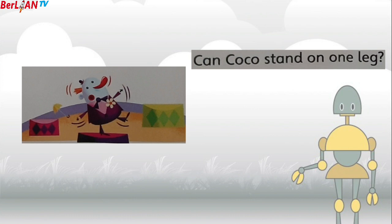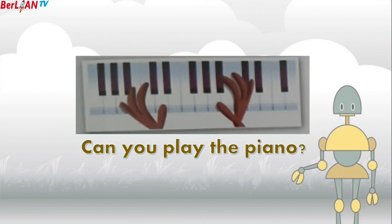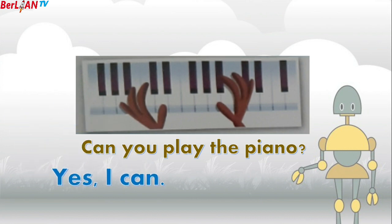And this is Coco the clown. Can Coco stand on one leg? Bisakah Coco berdiri di atas satu kaki? No, he can't. Tidak, dia tidak bisa. Can you play the piano? Bisakah kamu bermain piano? Yes, I can — jawab begitu jika kamu bisa. No, I can't — jawab begitu jika kamu tidak bisa.